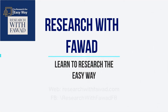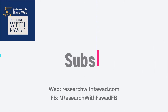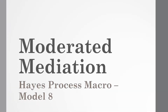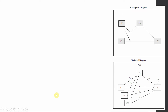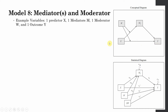In this session we are going to talk about moderated mediation. In this case the moderator is also moderating the direct effect from X on Y. The difference between Model 7 and Model 8 is that the moderator is moderating the direct relationship between X and Y as well.